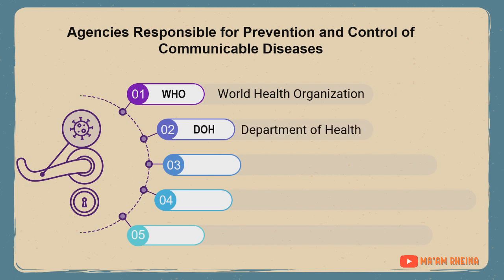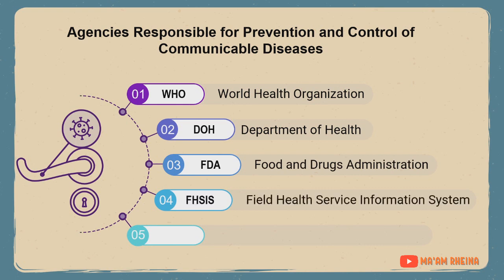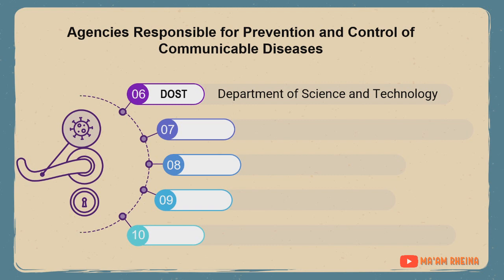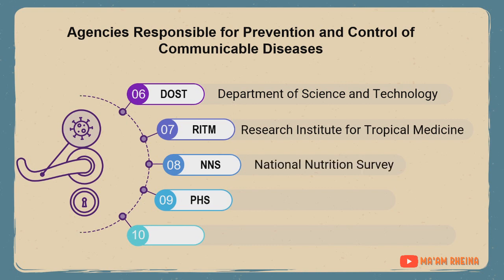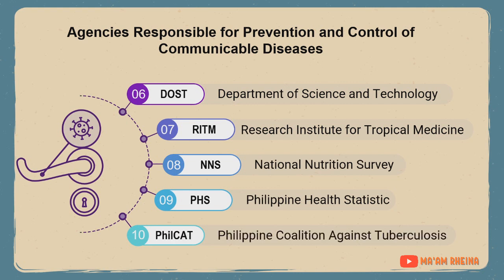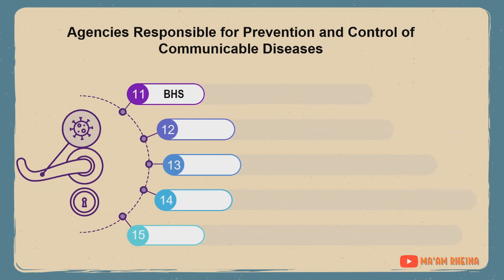Key agencies include: DOH, the Department of Health, the leading health agency in the country; FDA, the Food and Drugs Administration; FNRI, the Food and Nutrition Research Institute under DOST, the Department of Science and Technology; RITM, the Research Institute for Tropical Medicine; NNS, the National Nutrition Survey; PHS, Philippine Health Statistics; and PhilCAT, the Philippine Coalition Against Tuberculosis.